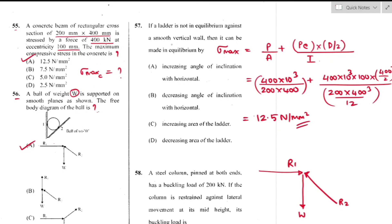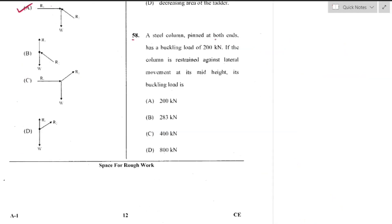Question number 57: If a ladder is not in equilibrium against a smooth vertical wall, it can be made in equilibrium by increasing the angle of inclination, which reduces the gravitational force component. By increasing the angle of inclination of the ladder, it can be put in equilibrium.